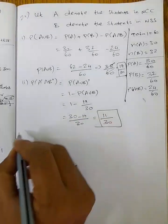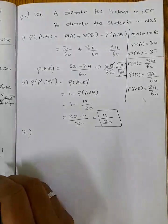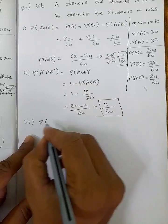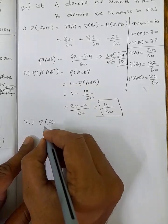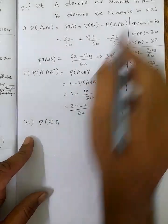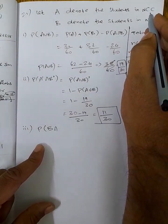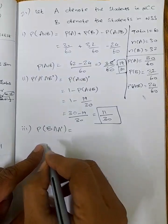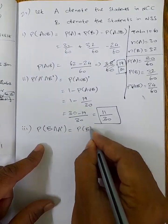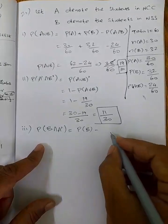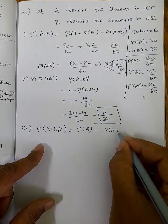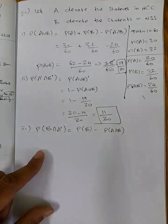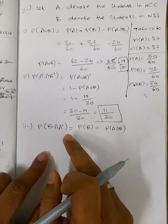Third part: NSS but not NCC. That is P of B intersection A dash. Total B minus P of A intersection B: 32/60 minus 24/60.